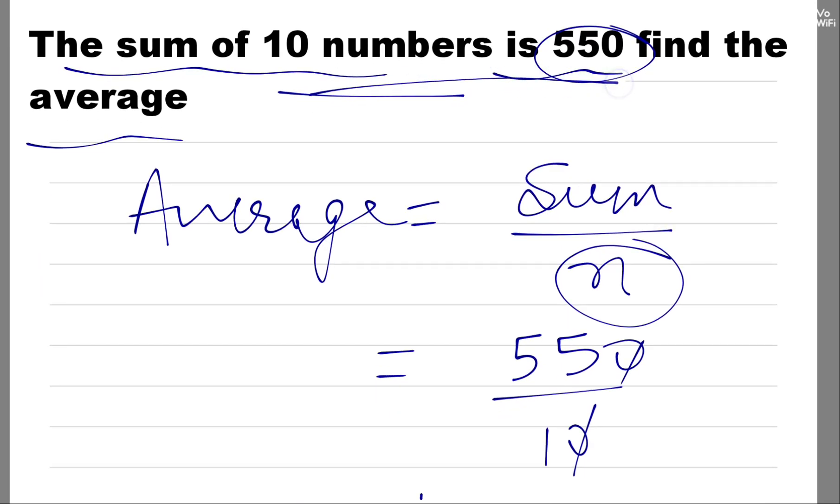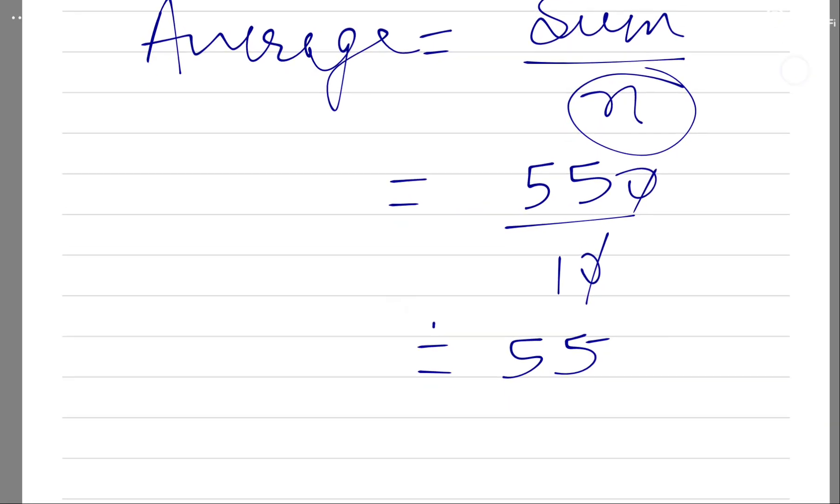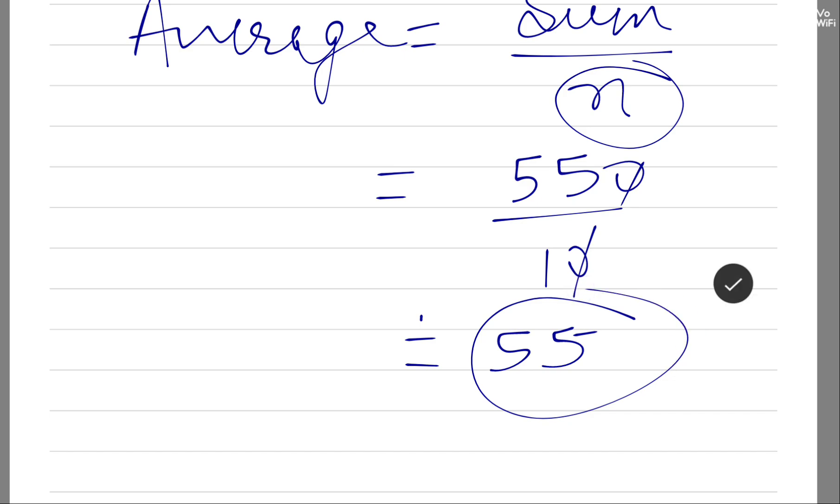So the average of 10 numbers whose sum is 550, the average here is 55. Fine, hope you like it, hope you understood.